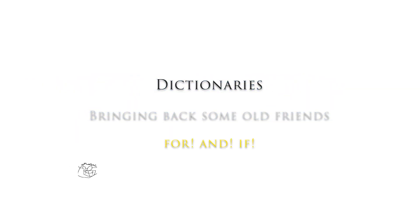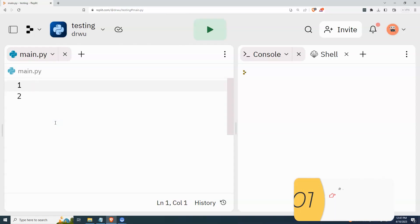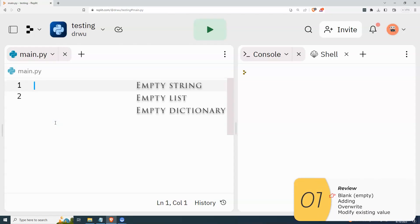Hello everybody. In this video, I'm going to review some concepts that you've seen before and then show how they apply to dictionaries. So let's get going. First I'm going to make some blank or empty strings, lists, and dictionaries.